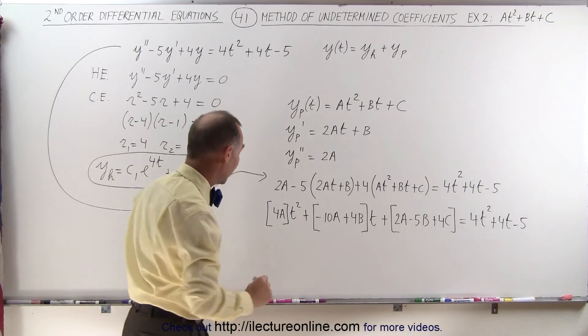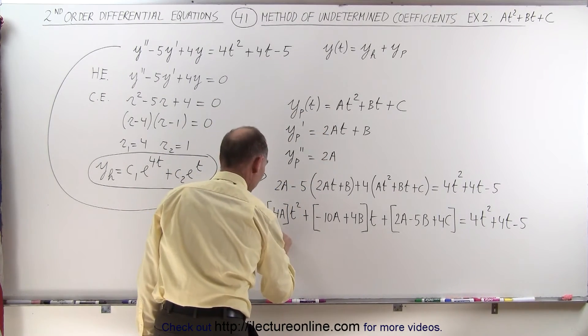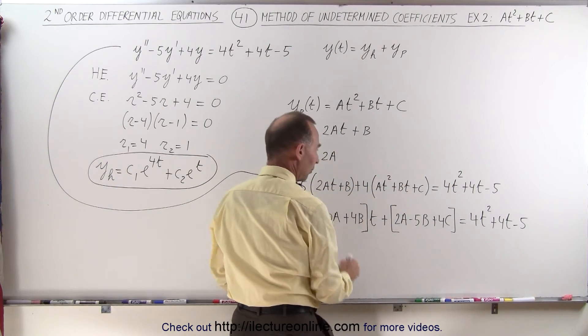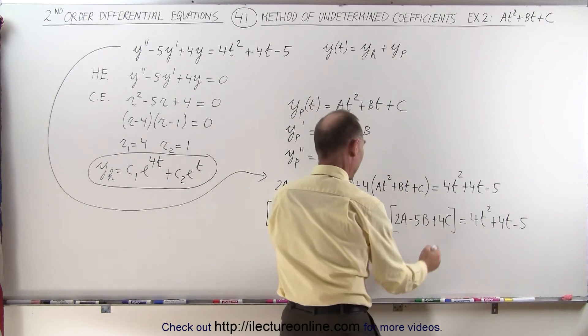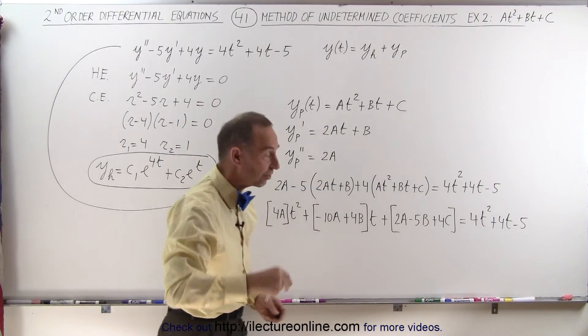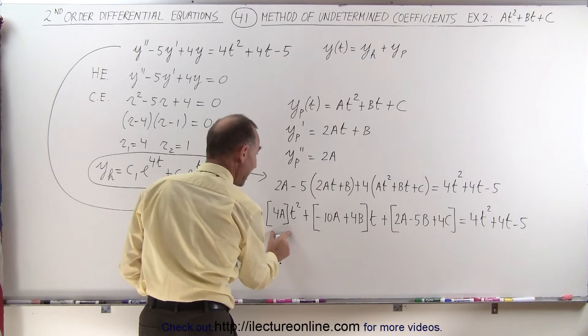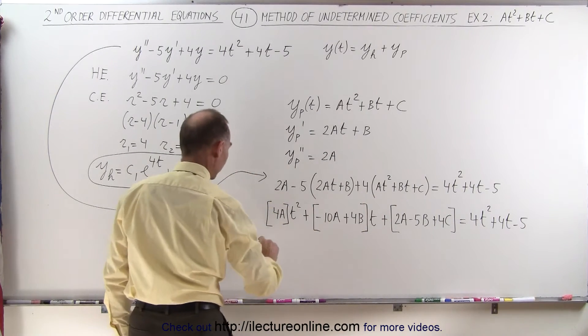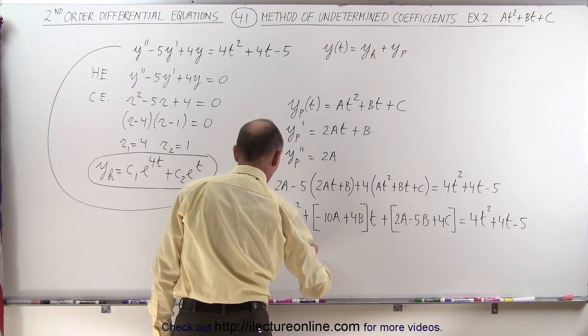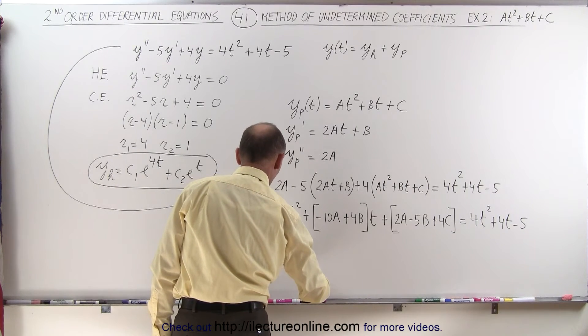That means that this right here, 4a, must equal 4. Minus 10a plus 4b must equal 4. And 2a minus 5b plus 4c must equal negative 5. So we take it one step at a time. We can first solve for a using the first comparison. So we can say that 4a is equal to 4, which means a is equal to 1.